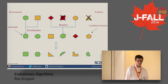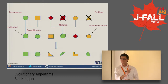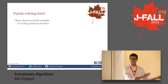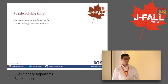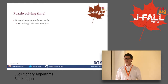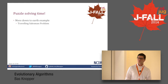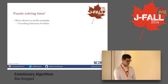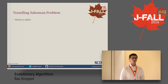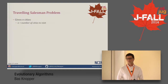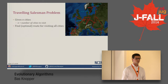Enough with theory — it's now puzzle-solving time. I'm going to use a more down-to-earth example than a NASA example: the traveling salesman problem. It basically comprises the following situation: you have n cities, you have to find the optimal route for visiting all cities. I'm a traveling salesman living in Spain, I want to visit all the cities on the picture, and I need to be home at 6 because my wife expects me at supper.